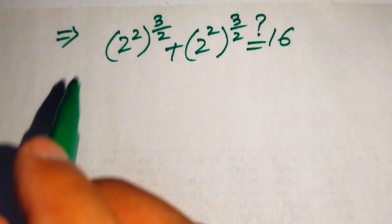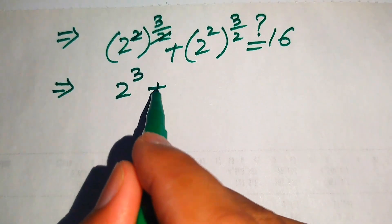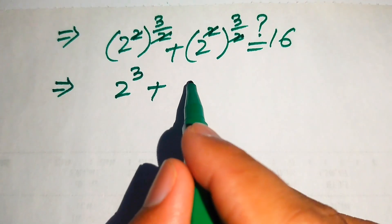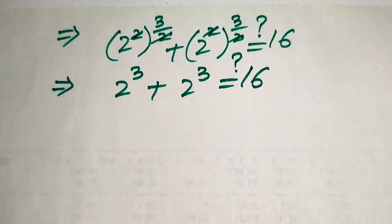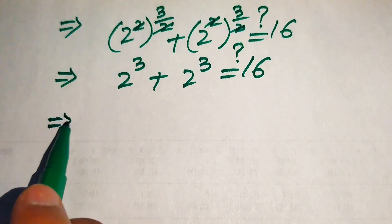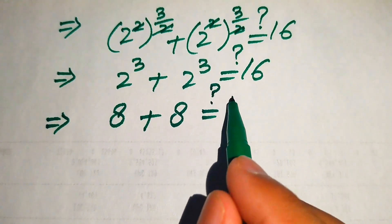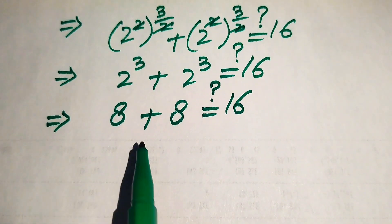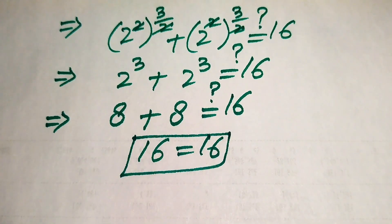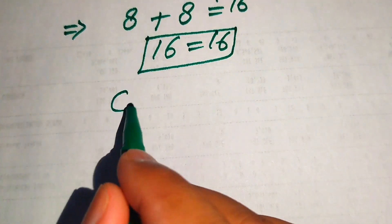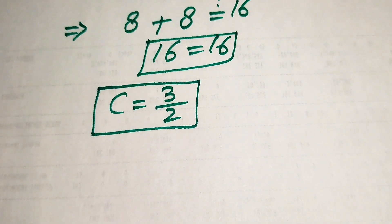We simplify: the exponents multiply, giving 2 cubed plus 2 cubed. Now 2 cubed equals 8, so we have 8 plus 8, which equals 16. Since 16 equals 16, this confirms that c equals 3 over 2 satisfies our original equation.